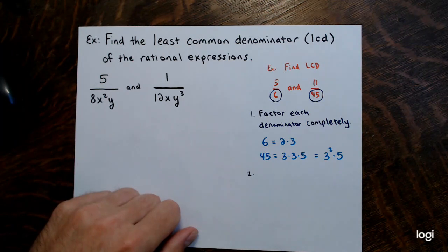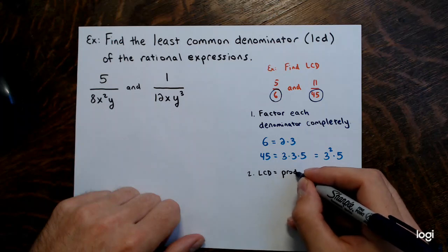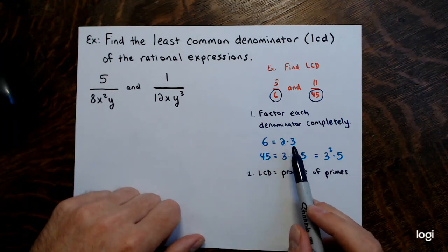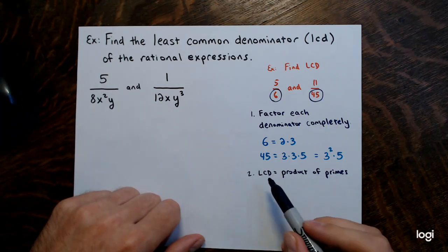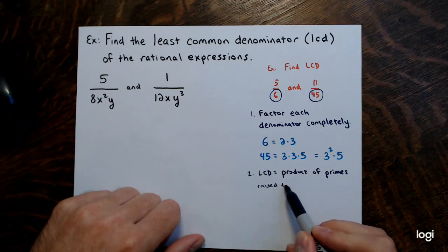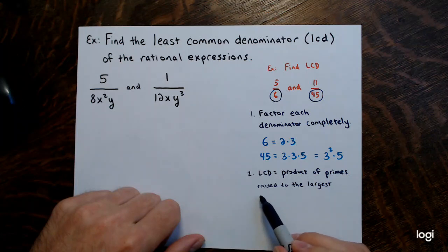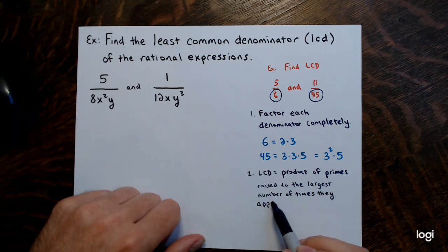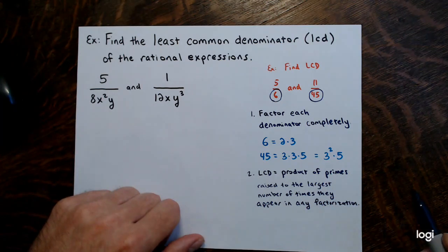The next part is writing out the LCD. The LCD is the product of the primes that show up, each raised to the largest number of times they appear in any single factorization. So I'm seeing primes 2, 3, and 5 — the LCD will have a power of each of those.